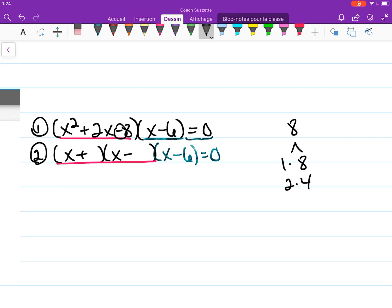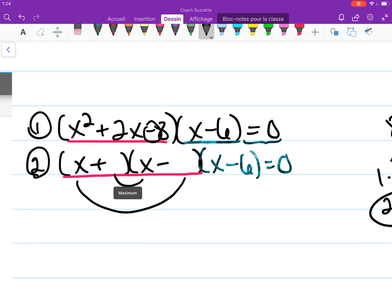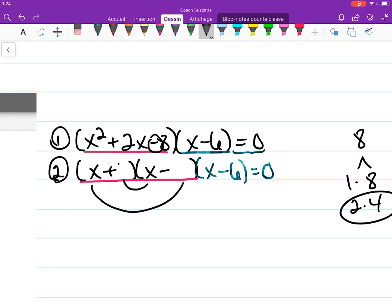And we also need it to be where we get a positive 2 when we combine the like terms from the inside and the outside. We can definitely get a 2 out of this if we do 4 minus 2. Since we need a positive 2 then it needs to be a plus 4 and a minus 2.